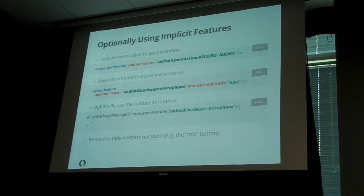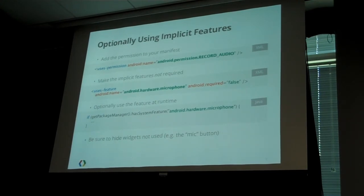The trick is that you're not only going to want to programmatically check for the feature before you use it, but you're probably also going to want to hide the widgets that aren't used on Google TV. For example, if your app has a microphone button or a camera button, make sure you hide that on Google TV. You do that in your onCreate method — check for the feature, and if the microphone isn't supported, call View.SetVisibilityHidden.